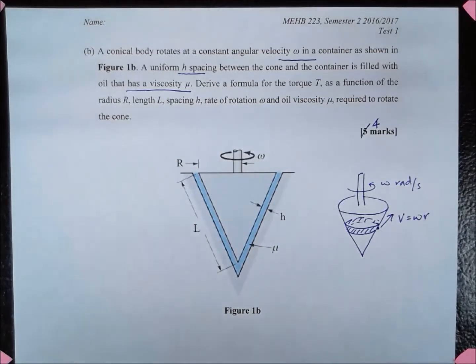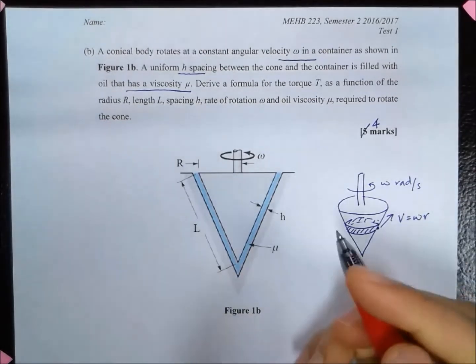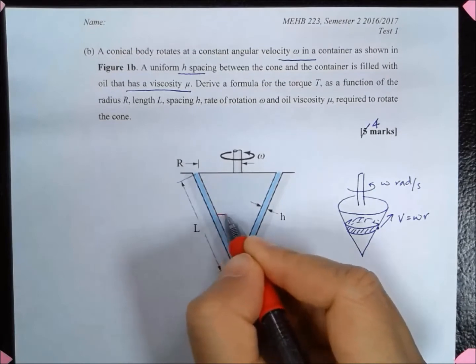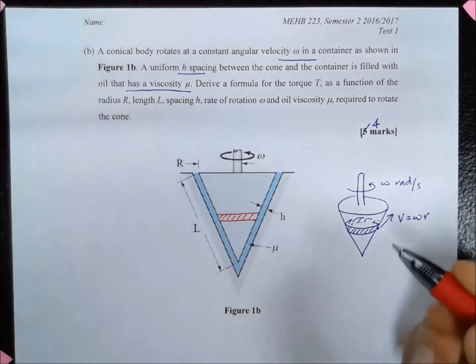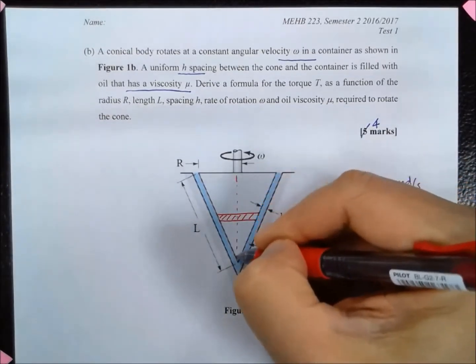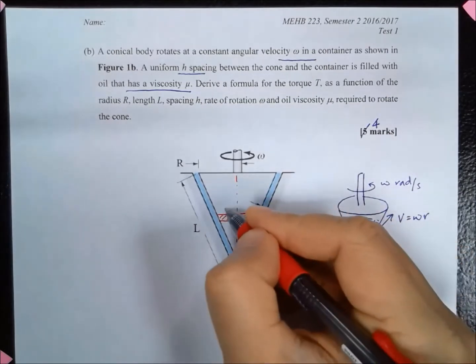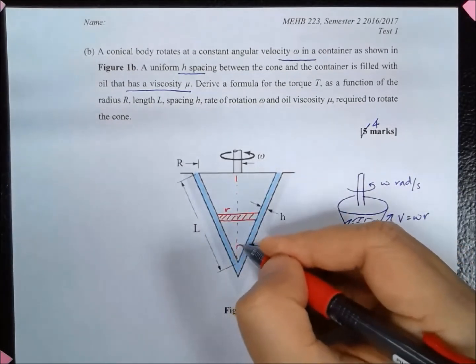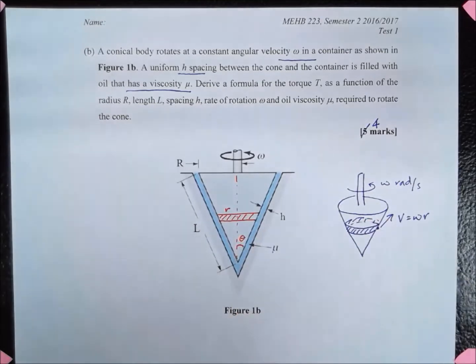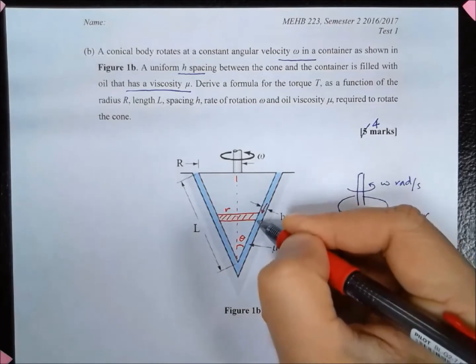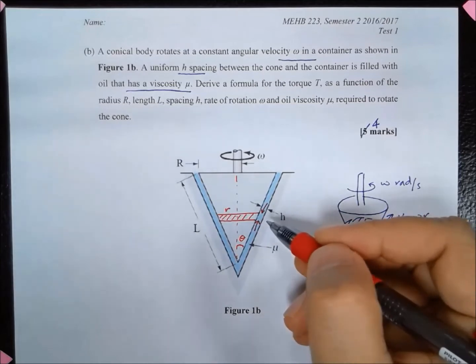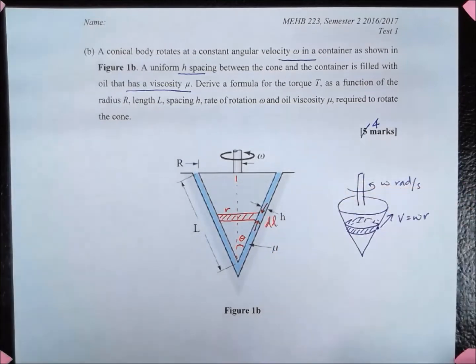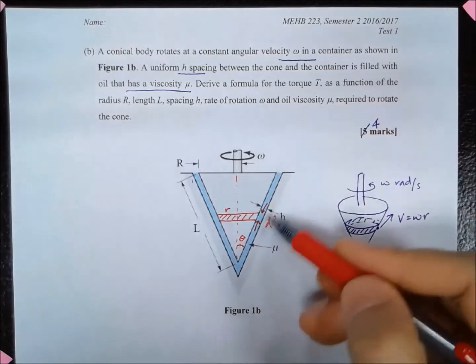We need to determine the torque on this elemental ring. If we draw the elemental ring here, this is the axis. The radius here is r, and let's call the angle here theta. The part of the surface of the cone there, we call that one dl, because this is L, so we call this one dl.